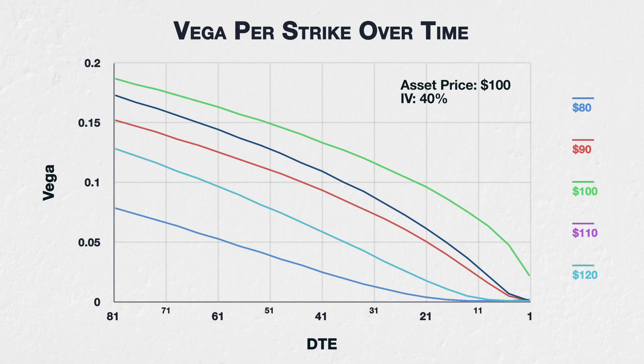You may think that this chart looks familiar, as it looks very similar to the extrinsic value chart in lecture 9.4, where we discussed the rate at which options lose their extrinsic value as time passes.